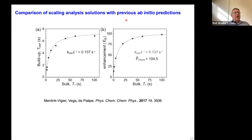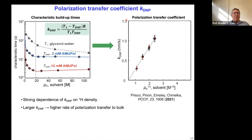We had a nice discussion with Fred Mentink-Vigier at the ACS, and we looked at earlier work from him, Shimon Vega, and Gael De Paëpe where they used ab initio predictions for buildup times as a function of bulk T1 and enhancement as a function of bulk T1. Their simulations are these crosses, and our analytical solution maps right on top of it — very satisfying agreement with the ab initio predictions. I think it basically shows we've got it right. What the analytical solution does is give us much more intuition about the parameters that we as experimentalists can choose to adjust.